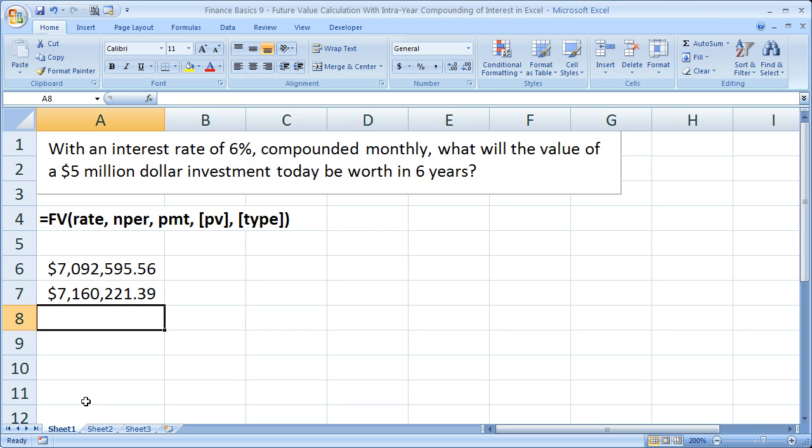The most important thing to remember from this lesson is that the interest rate and the number of periods, as well as the payment if it's an annuity, all have to match. If it's compounded monthly, your number of periods is monthly, which means you adjust your interest rate to be a monthly interest rate, and you adjust your payment amount to be monthly. By default, this interest rate deals with one year or 12 months.